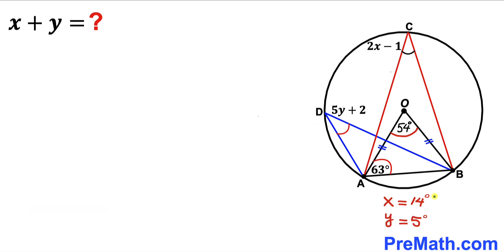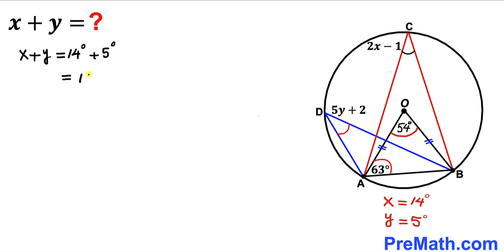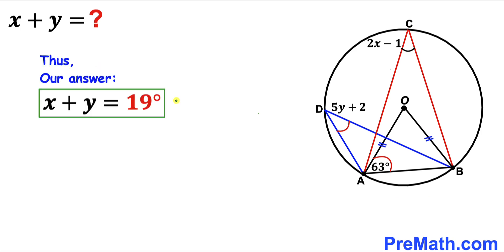So we have found X equals 14 and Y equals 5. Therefore X plus Y equals 14 plus 5, which is equal to 19 degrees. Our final answer is 19 degrees. Thanks for watching and please don't forget to subscribe to my channel for more exciting videos.